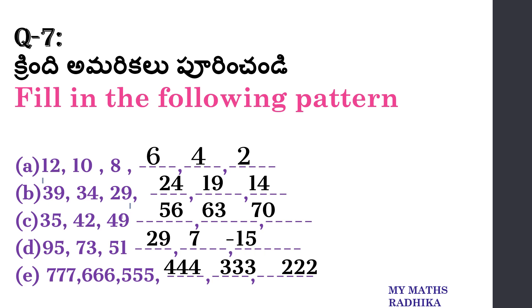What is the pattern? 777, then 666, then 555, then automatic: 444, 333, 222. Next day is the last pattern.